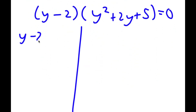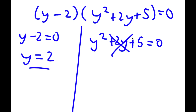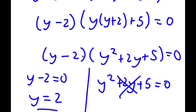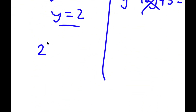This gives me two equations: y minus 2 is equal to 0, and y squared plus 2y plus 5 is equal to 0. For y minus 2 equals 0, y is equal to 2. For y squared plus 2y plus 5 equals 0, using the quadratic formula, there is no real solution because it results in the square root of a negative number. So y equals 2 is my only solution. Now remember we set 2 to the power of x equal to y, so 2 to the power of x is equal to 2, meaning x is equal to 1.